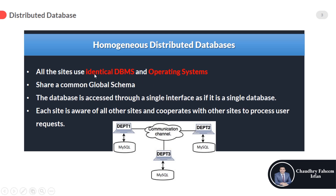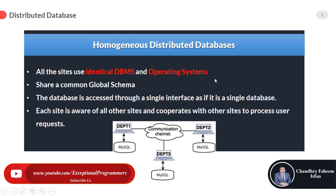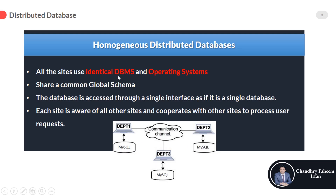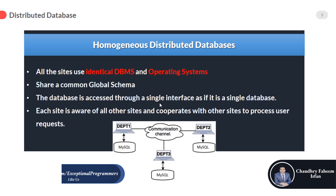Here are a few properties of homogeneous distributed databases. All the sites use identical DBMS and operating system. Look at department 1, department 2, and department 3 — all sites are using the same identical, similar MySQL DBMS and also the same operating system, maybe Linux server or Windows.